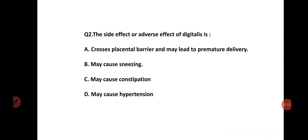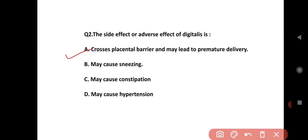The side effect or adverse effect of digitalis: Option A is it crosses the placental barrier and may lead to premature delivery. Option B is it may cause sneezing. Option C is it may cause constipation. Option D is it may cause hypertension. The correct answer is Option A — it crosses the placental barrier and may lead to premature delivery.